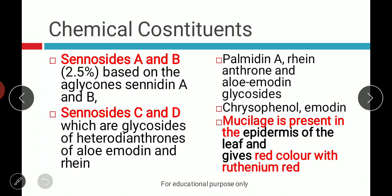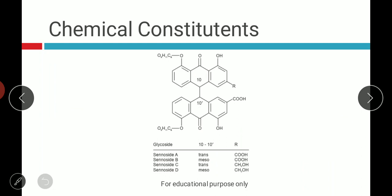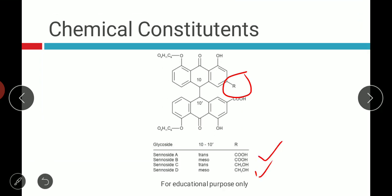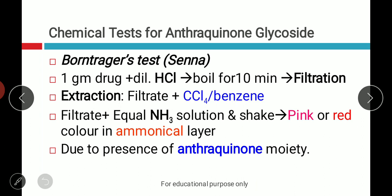It also contains chrysophanol, emodin, and mucilage present in the epidermis region, which can be observed with ruthenium red giving reddish color to the mucilage. Sennosides A, B, C, and D are structural isomers — their structures differ by the R group substitution. Next is the chemical test for anthraquinone glycoside, that is the Bornträger test, which we have already covered.